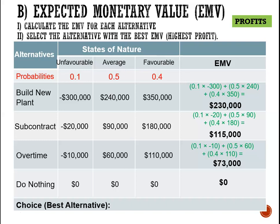So now we are making a choice. Our alternatives are: build a new plant at an expected profit of $230,000, subcontract at $115,000, do overtime at $73,000, or do nothing at $0. The highest expected profit is $230,000, so our choice would be to build a new plant. We note our highest expected profit of $230,000.